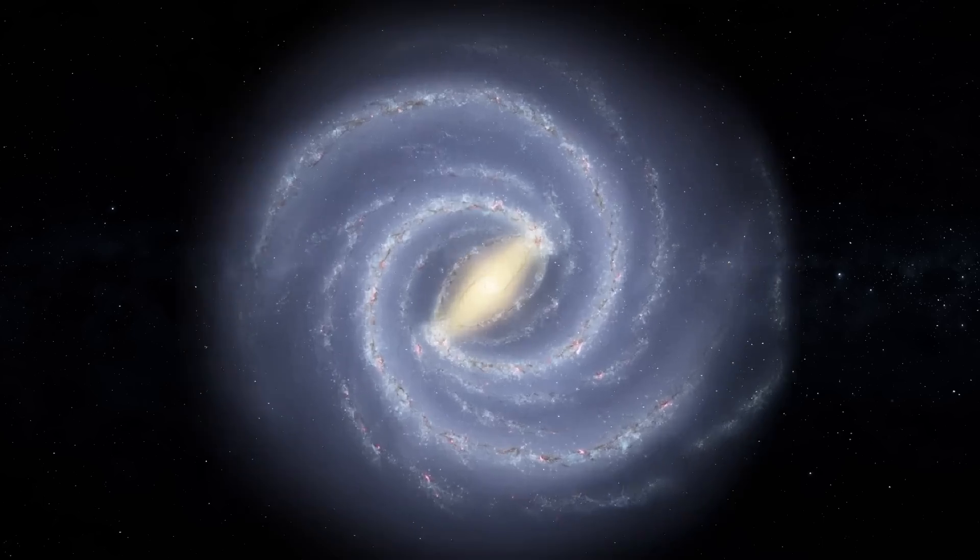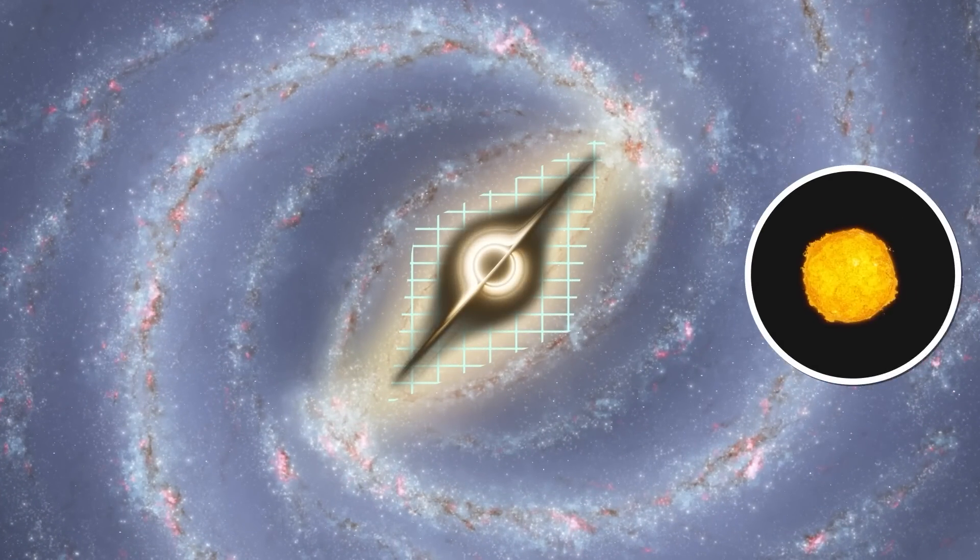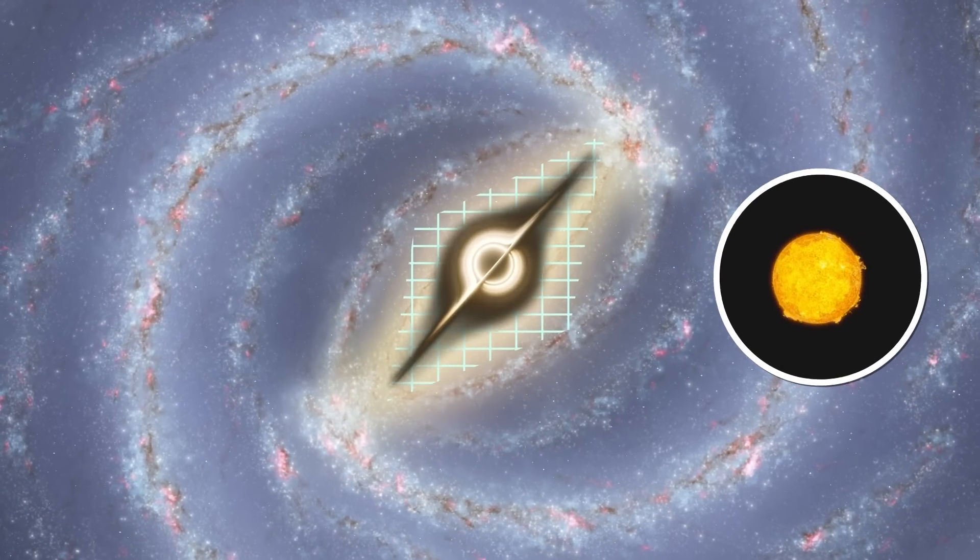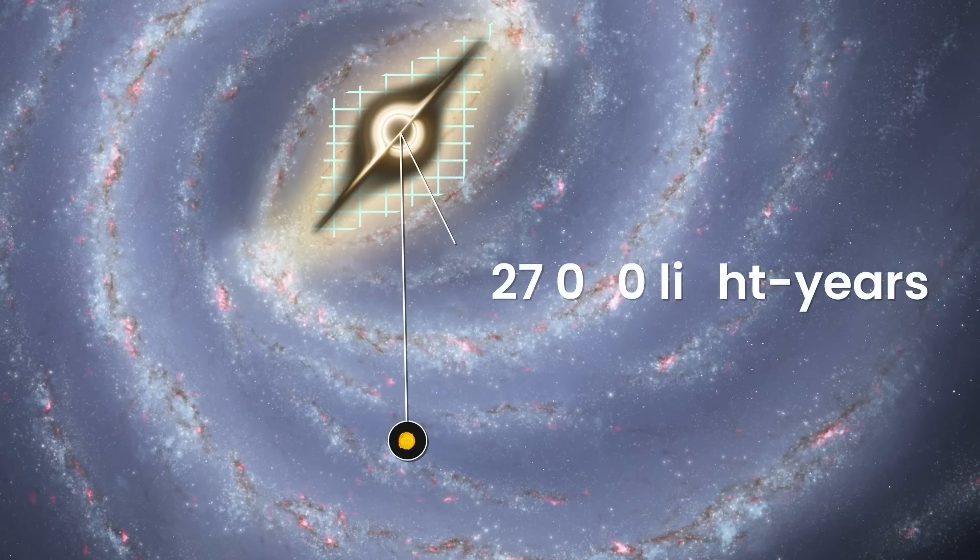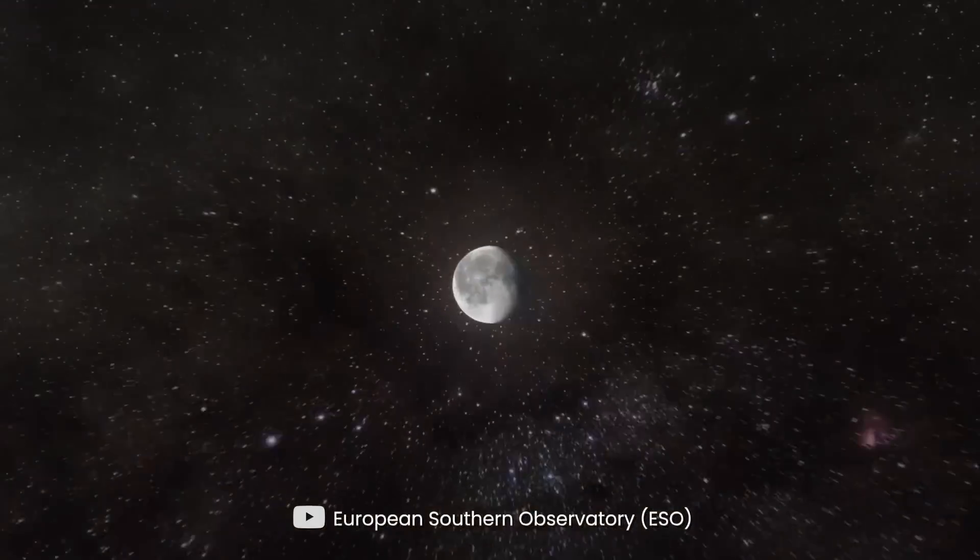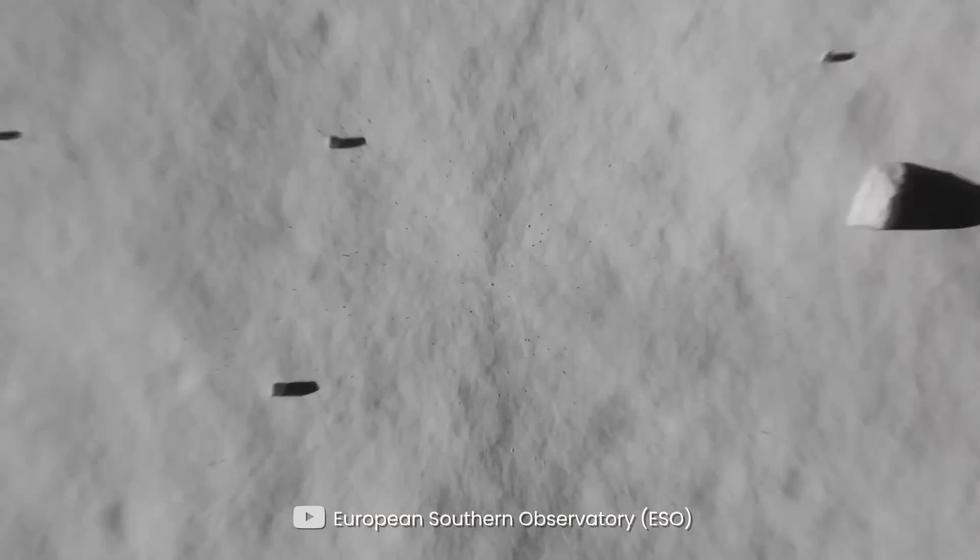The mass of the black hole in our galaxy is more than 4 million times that of our sun. Sagittarius A-star is located 27,000 light years from Earth, and finding it in the sky is no easier than spotting a donut on the moon.